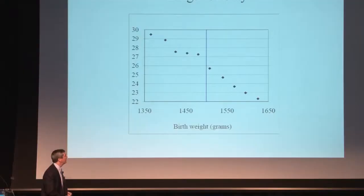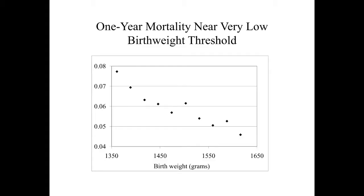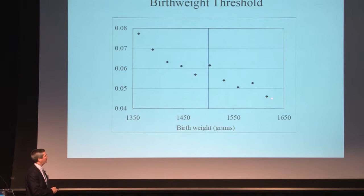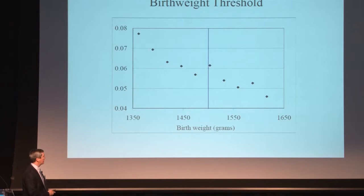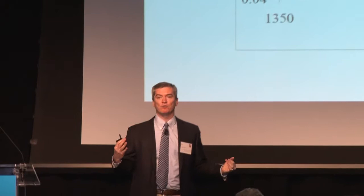Now let's look at one-year mortality using nationwide data — about 300,000 observations around these six data points. This type of threshold analysis requires a lot of data. As you get heavier, you get healthier, so mortality is lower. But right at the discontinuity, you see a downward shift in mortality against the trend. We combine the difference in treatment intensity with the difference in outcomes to estimate a return to care — very similar patients, different exposure to treatment intensity, different outcomes. That's one example of using a diagnostic threshold as a natural experiment.